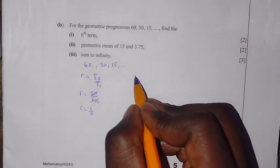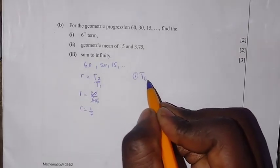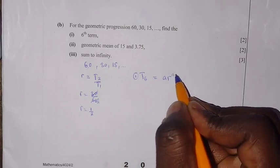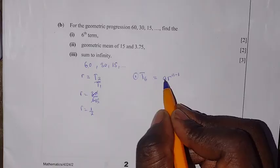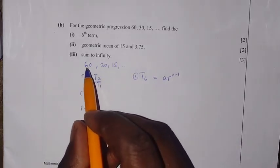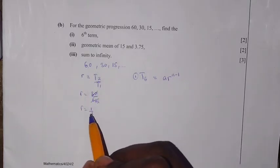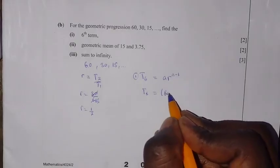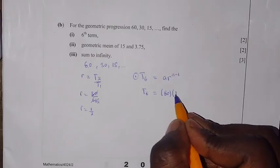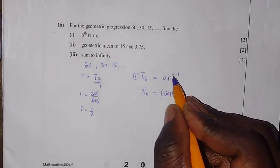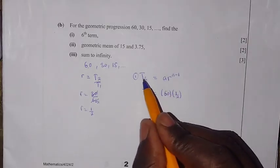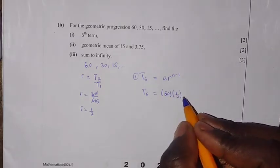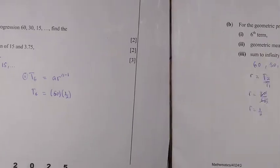Now we can find question 1, which asks for the sixth term. The formula is: nth term = a × r^(n-1), where a is the first term. Looking at this geometric progression, the first term a = 60, r is the common ratio 1/2, and n is the position of the term. Since we want the 6th term, n = 6.